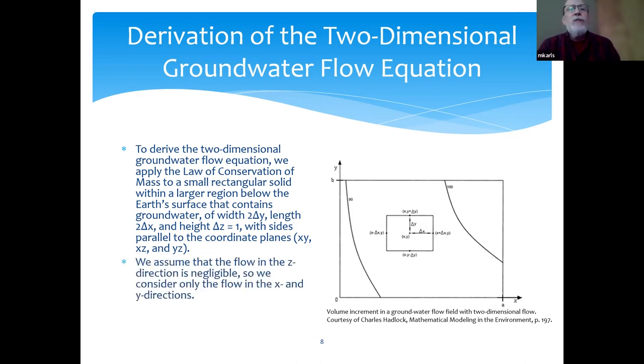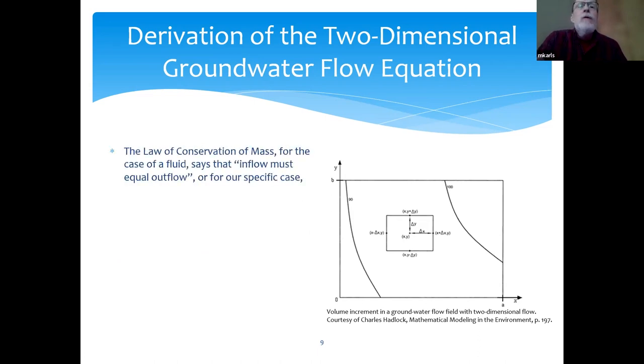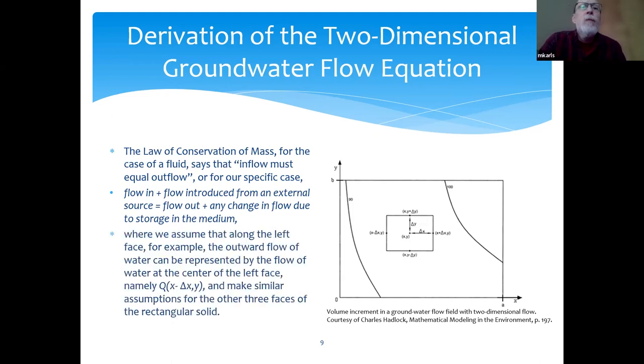We'll assume the flow in the z direction is negligible, so we're considering only flow in the x and y directions. The law of conservation of mass for the case of a fluid says that inflow must equal outflow, or for our specific case, flow in plus the flow introduced from an external source is equal to the flow out plus any change in flow due to storage in the medium. Water is going to flow into this rectangular region this way, out that way, and we're going to assume that along the left face, for example, the outward flow of water can be represented by the flow of water at the center of the left face, and we'll make similar assumptions for the other three faces of the rectangle.